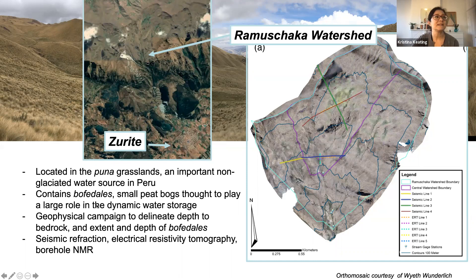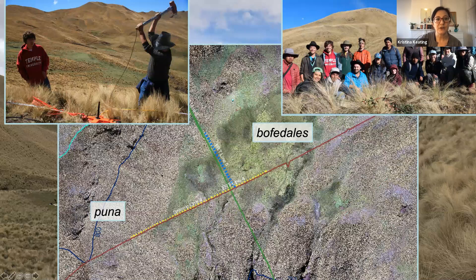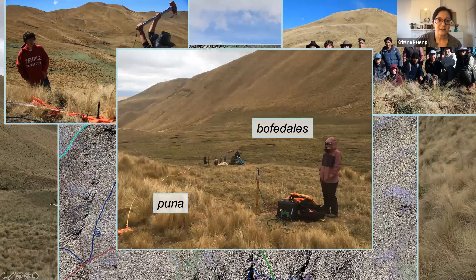We used geophysics at this site to delineate the depth of bedrock, and the extent and depth of the bofedales. Measurements were made using seismic refraction, electrical resistivity tomography, and borehole NMR. This close-up picture of the bofedales shows different types of surface coverage — a deeper peat in the darker green region and Puna grasslands nearby. This is a picture of the NMR data being collected during this field campaign.